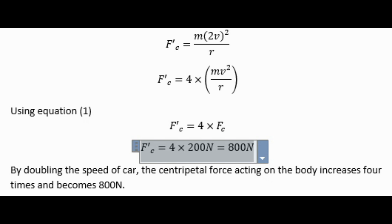F'_c = 4 × 200 N = 800 N. By doubling the speed of car, the centripetal force acting on the body increases four times and becomes 800 N.